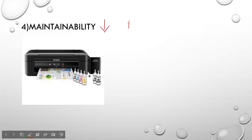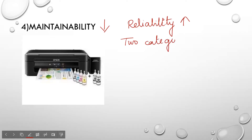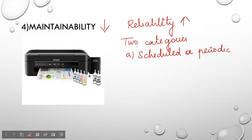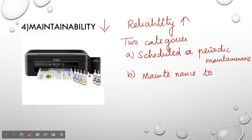Your maintainability is less when your reliability is more. When the reliability is very high, you need only less maintenance. There are two categories: the first one is scheduled or periodic maintenance, and the second one is maintenance due to unpredicted failures.